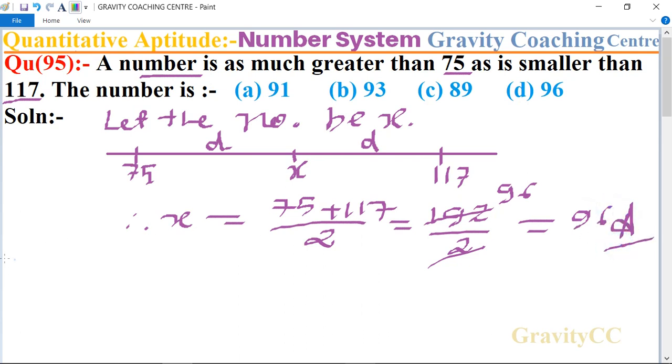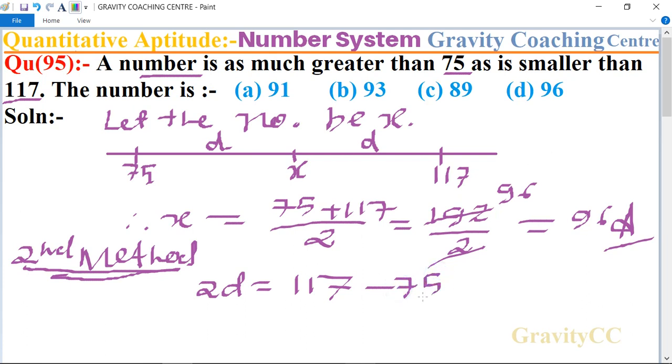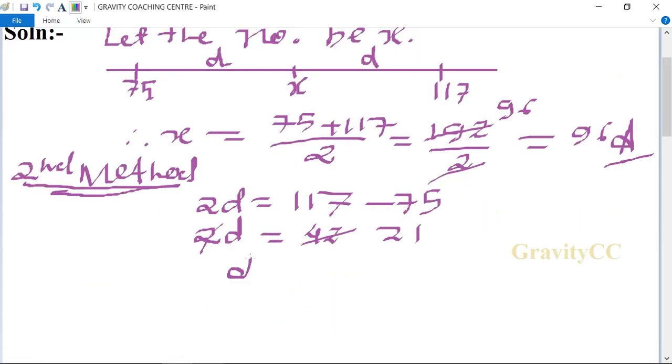The second method. First we find the 2d equal to 117 minus 75, so 2d equal to 42. So 42 is cancelled by table of 2, 21. So the value of d equal to 21.